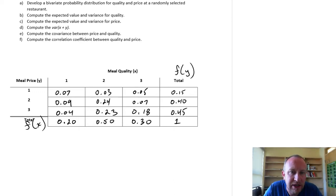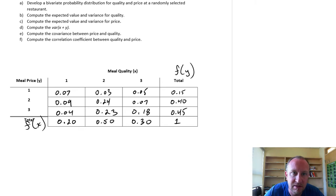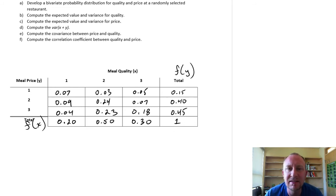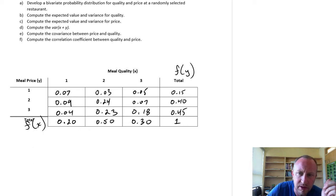Welcome back. This video is a continuation of the video where we completed the bivariate probability distribution, which is part A of exercise 5-4. In this next video, part B, we're going to go through computing the expected value and variance for quality, and then time permitting, I'll also do computing the expected value and variance for price. These are both not necessarily difficult calculations, but they're long and tedious, which means there's lots of room for really simple mistakes.